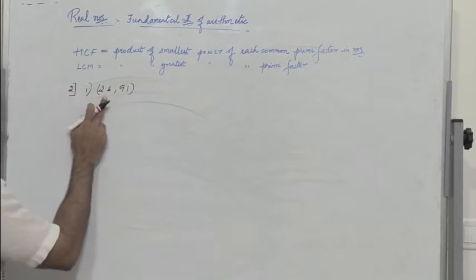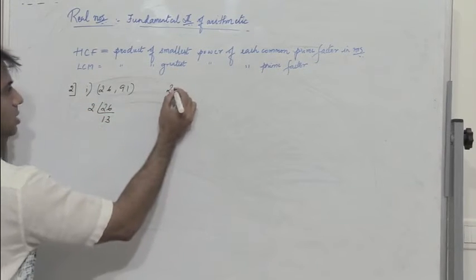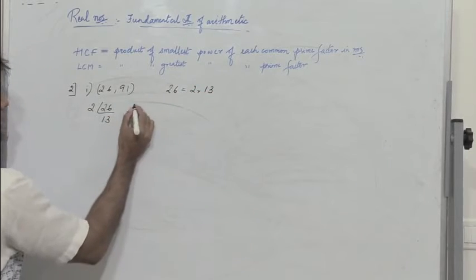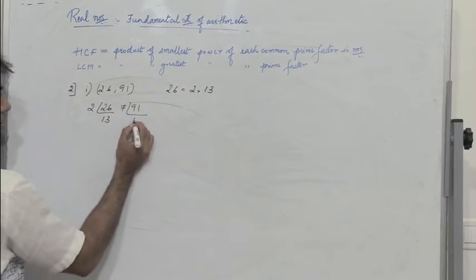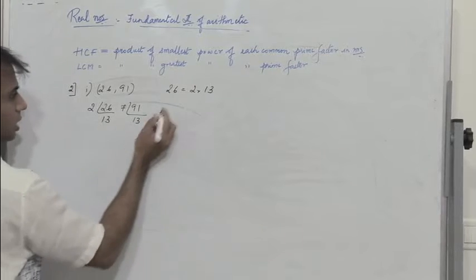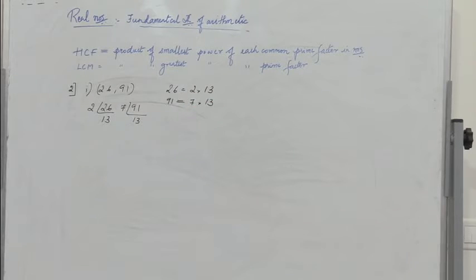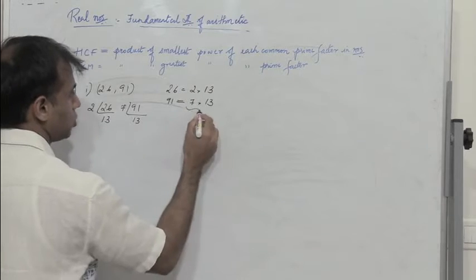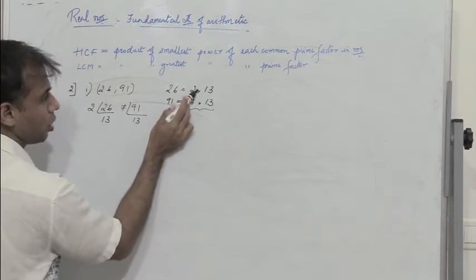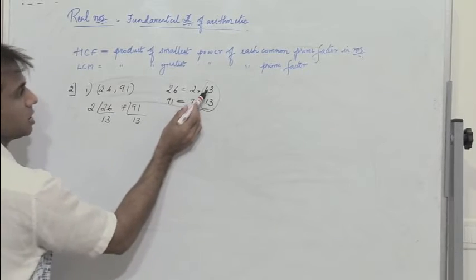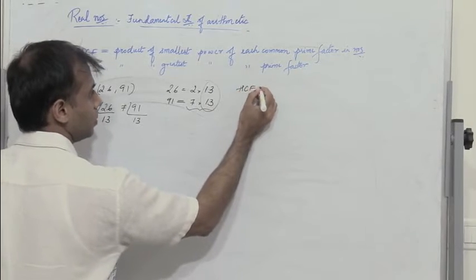I need to represent 26 as a product of prime numbers. Dividing 26 by 2, I get 13. So 26 = 2 × 13. Now consider 91: dividing by 7, I get 13. So 91 = 7 × 13. For HCF, I find the smallest power of each common prime factor. The number common to both is 13, and the smallest power is 13¹. Therefore, HCF = 13.